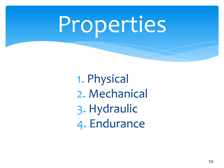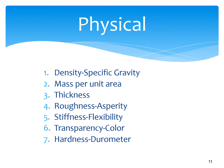The properties we look at are physical, mechanical, hydraulic, and endurance. As far as physical properties are concerned, we have density or specific gravity, mass per unit area, thickness, roughness or asperity, stiffness, flexibility, drapeability, transparency or color — which is sometimes important — and then hardness or durometer.